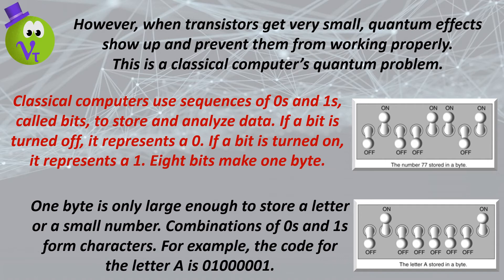One byte is only large enough to store a letter or a small number. Combinations of zeros and ones form characters. For example, the code for the letter A is 01000001.